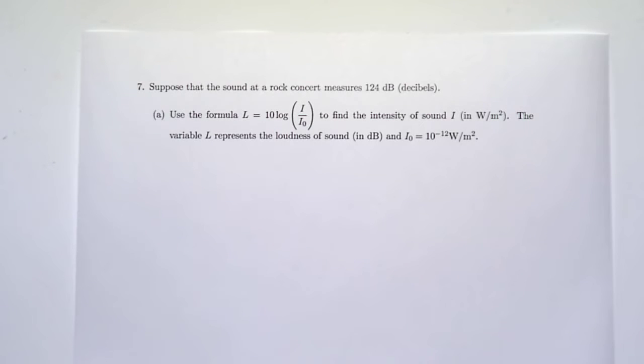We want to use the formula L equals 10 times log of I over I₀ to find the intensity of sound I. The variable L represents the loudness and I₀ is 10 raised to the negative 12. All right, so that's a lot.